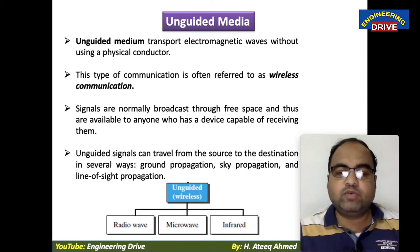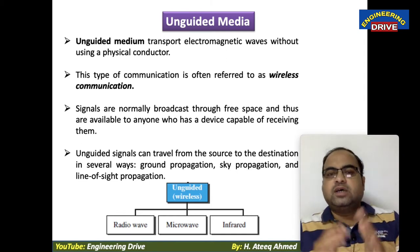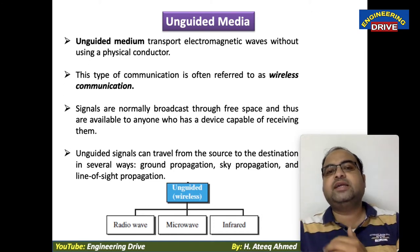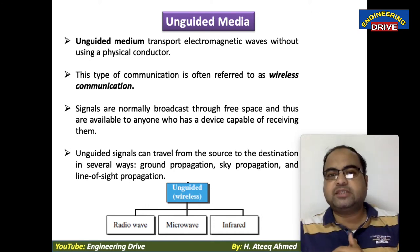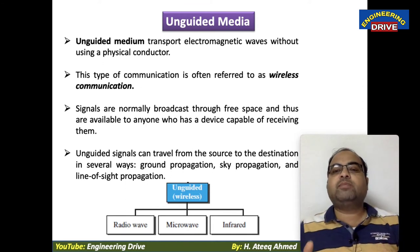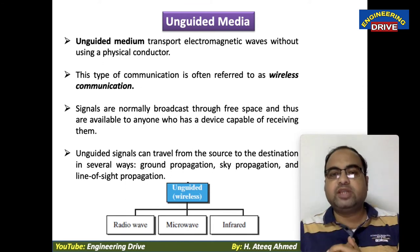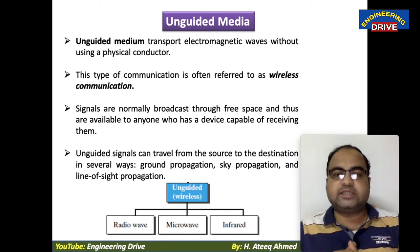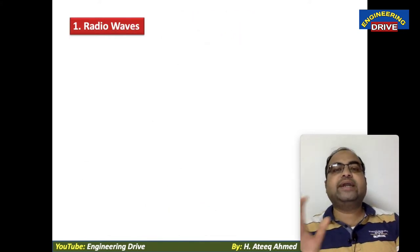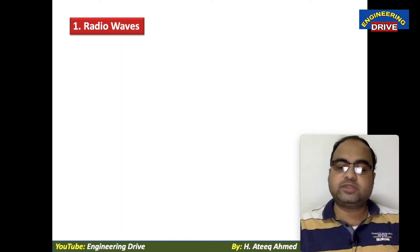There are three types of unguided media I'm going to explain in today's session: radio waves, microwaves, and infrared waves. The unique feature about all three is that they are wireless — there is no involvement of any physical connectivity.